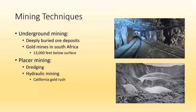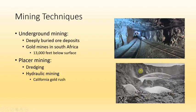Underground mining techniques go after deeply buried ore deposits, chasing highly concentrated veins. Some gold mines in South Africa go down 13,000 feet below the surface chasing gold veins. Placer mining can be done via dredging or hydraulic mining — using high-power hoses to wash sediment through sluice boxes to catch gold, as in the California Gold Rush. Modern placer operations remove overburden, mine down to the good placer layer, and sort material hydraulically with machines.